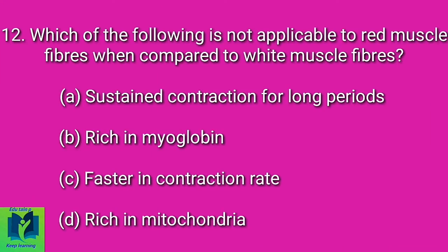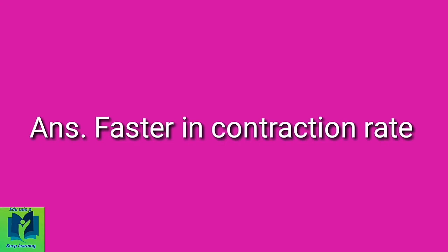Which of the following is not applicable to red muscle fibers when compared to white muscle fibers? Option A: Sustained contraction for long periods. Option B: Rich in myoglobin. Option C: Faster in contraction rate. Option D: Rich in mitochondria. Answer: Faster in contraction rate.